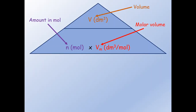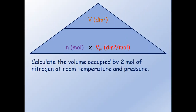Now let us look at an example question. Calculate the volume occupied by two mole of nitrogen at room temperature and pressure. In this question we have to calculate the volume V, and if we cover up the volume V at the top of the formula triangle, we find that to calculate it we have to take the amount in mole n and times it by the molar volume Vm.